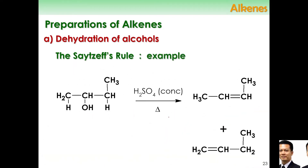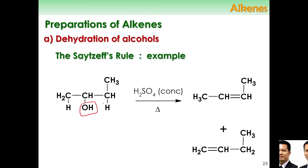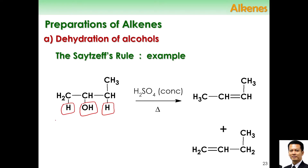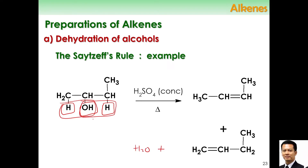Let's see an example. We have alcohol here that is going to be dehydrated. This is the hydroxy group. You need to eliminate water, so you remove OH and one hydrogen. You can remove the hydrogen at the carbon on the right, or you can dehydrate using the hydrogen from the left to form the water, which is the byproduct.